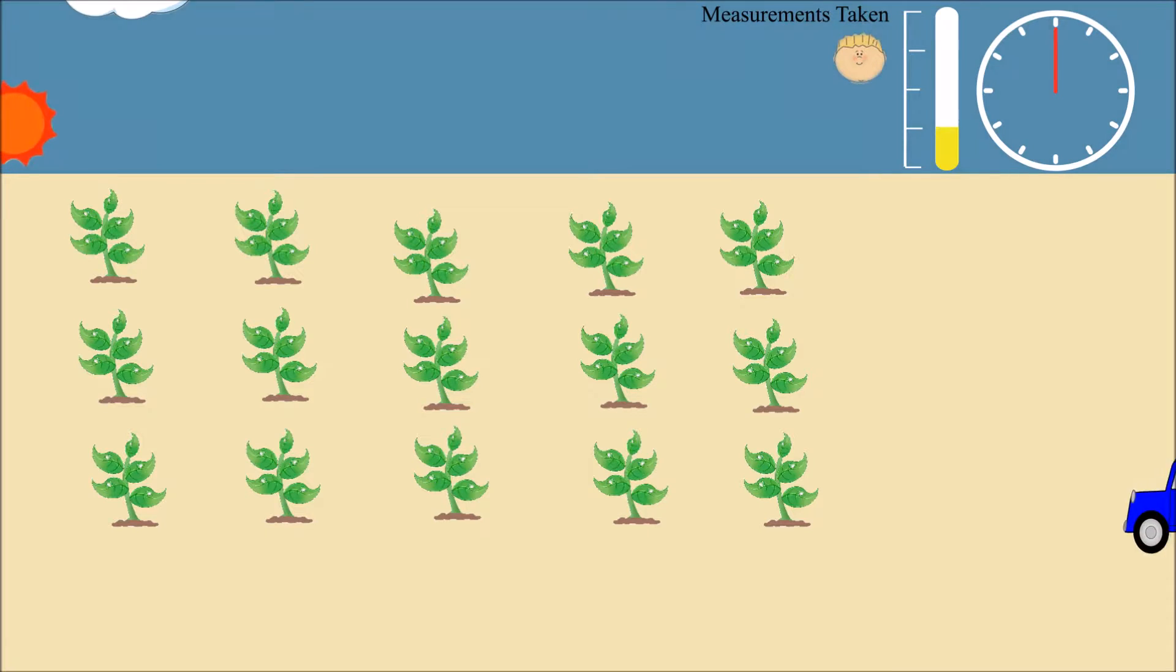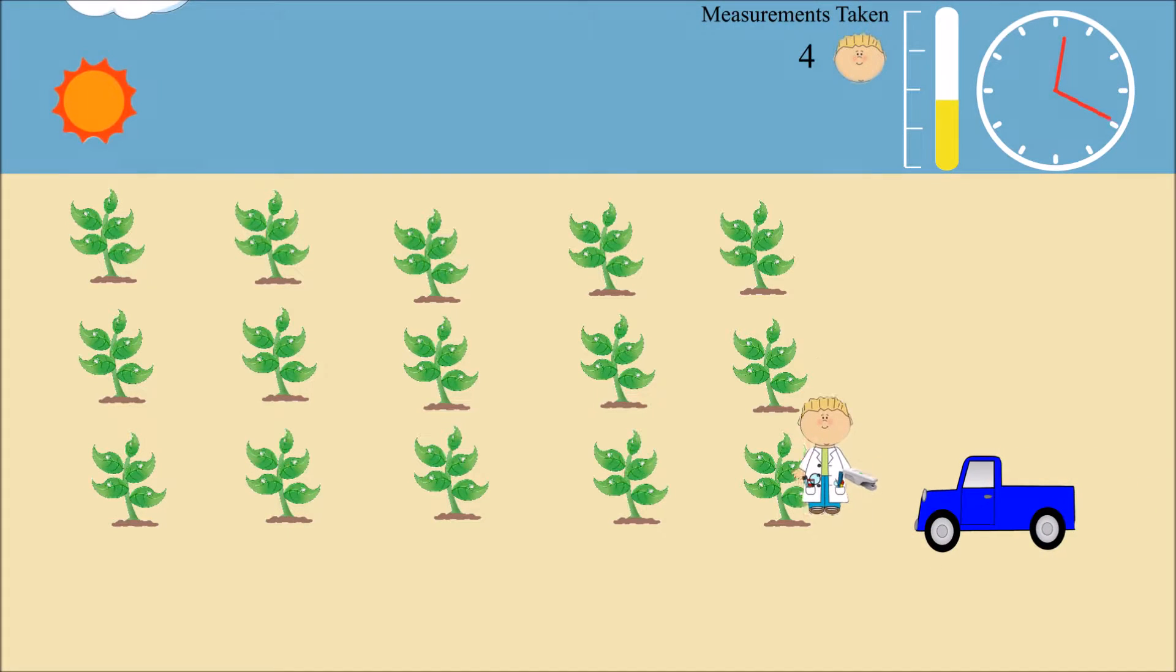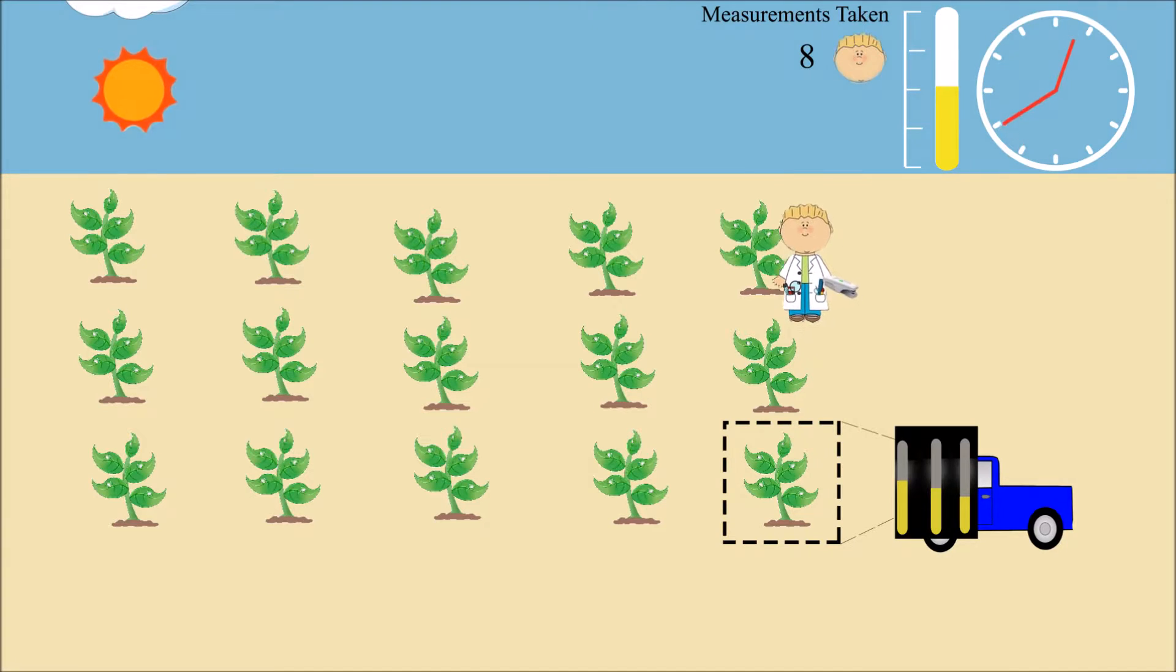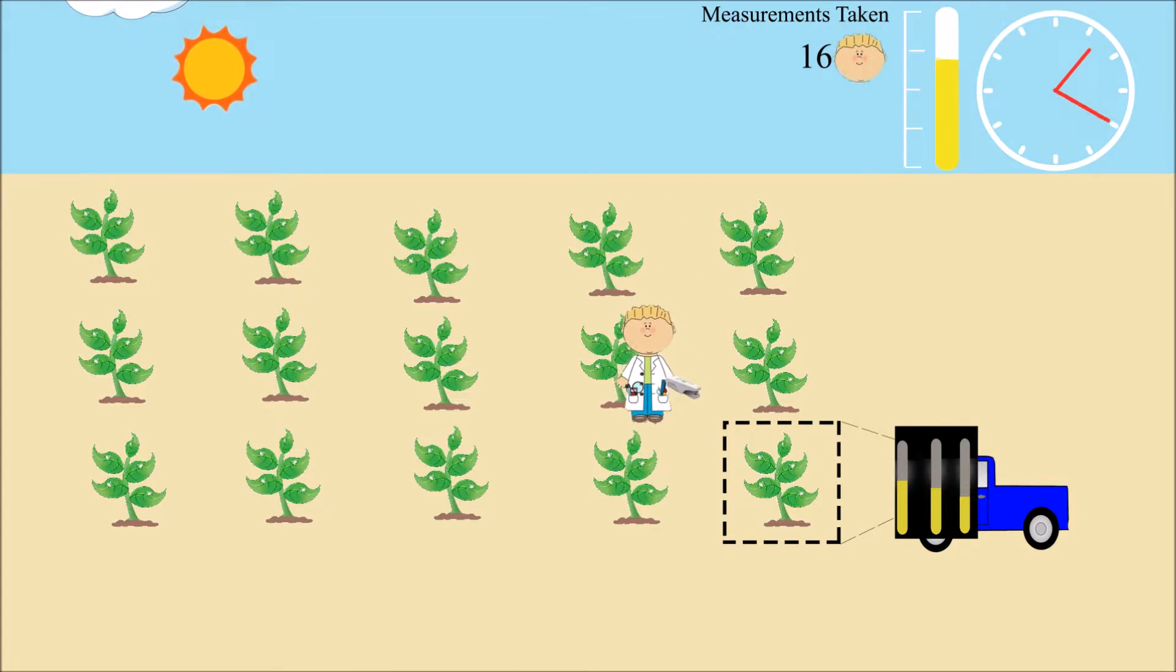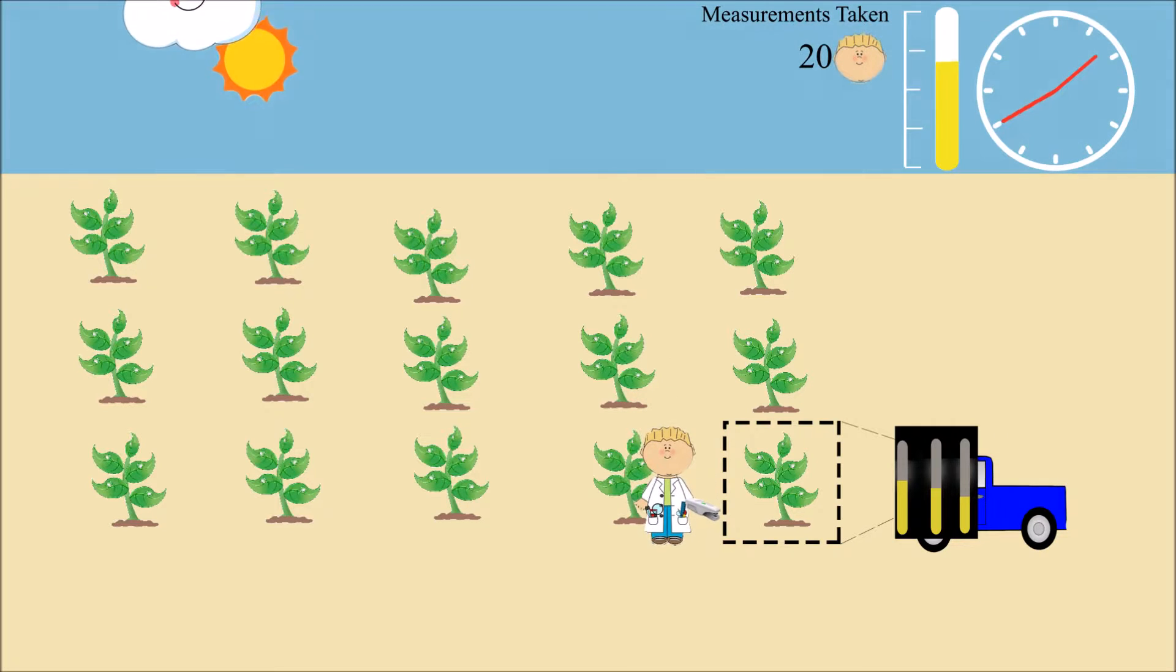When we are measuring plants outdoors, we cannot measure all of our plants under the exact same light conditions at the exact same time of day. So we need to collect data in a way that reduces the effect of differing light conditions and times of day on photosynthetic parameters.